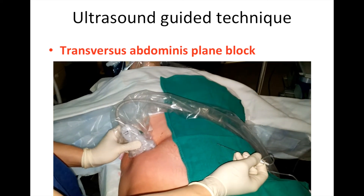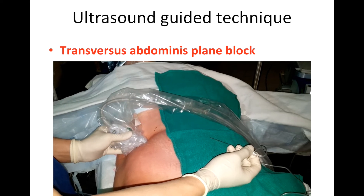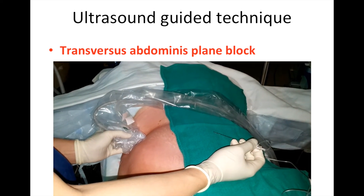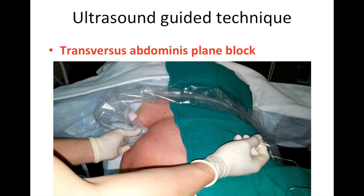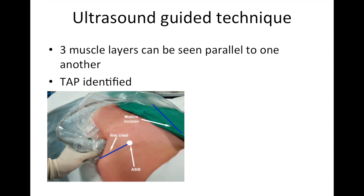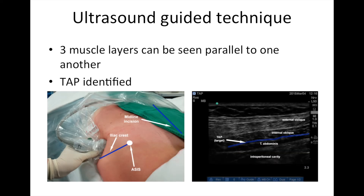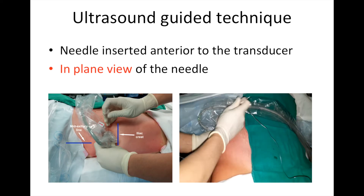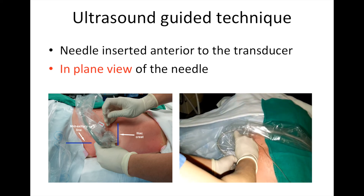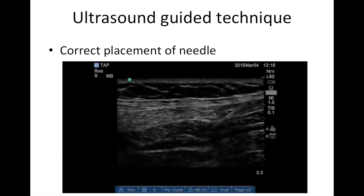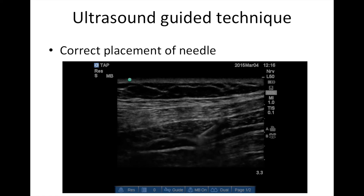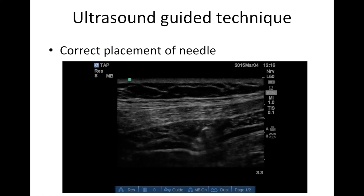TAP block done under ultrasound guidance has the advantage of visualizing the needle during insertion to ensure correct placement, avoiding injuries and increasing success rates. The operator scans from the midline of the abdominal wall towards the area between the iliac crest and the costal margin in the mid-axillary line. The three muscle layers can be seen running parallel to one another, and the transversus abdominis plane can be identified between the internal oblique and transversus abdominis. The needle is inserted anterior to the transducer for an in-plane view as it advances. Upon injection, the fascial plane is seen to separate and form a hypoechoic elliptical shape between the internal oblique and transversus abdominis.